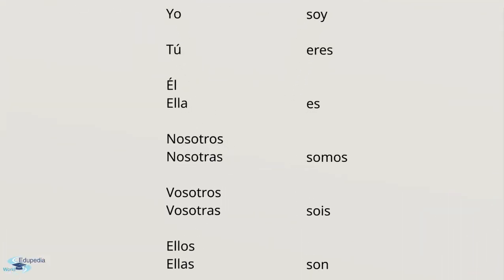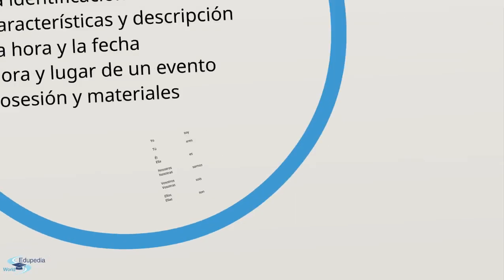How do you conjugate the verb ser? In present: yo soy, tú eres, él/ella es, nosotros/nosotras somos, vosotros/vosotras sois, ellos/ellas son.